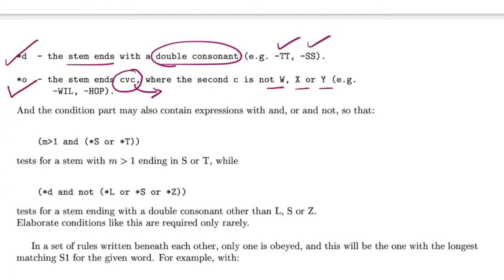Now you can use these base conditions to form some complex conditions where you're checking if the measure of the word is greater than one as well as it ends with S or T. Similarly, in the second case, you're matching on a word that ends with double character sequences of the same consonant, and at the same time this condition is not true, meaning the double characters are not double L, S, or Z.